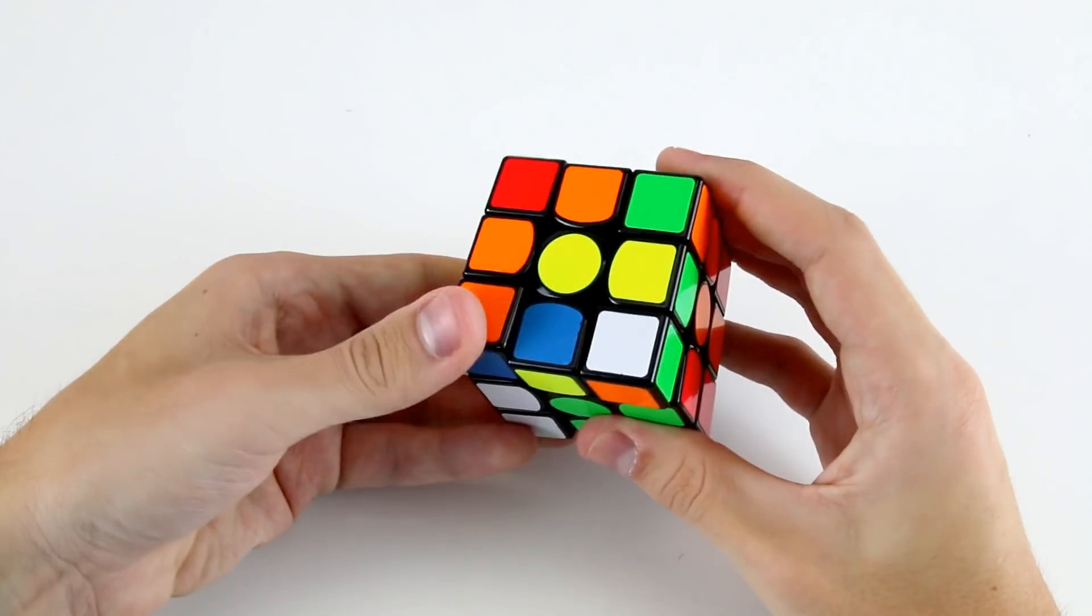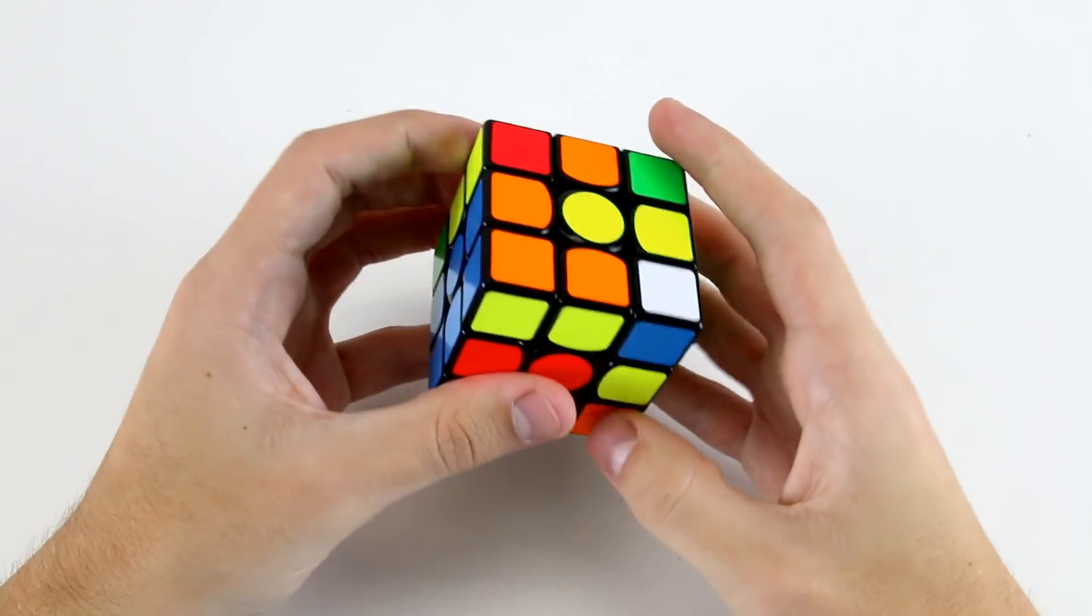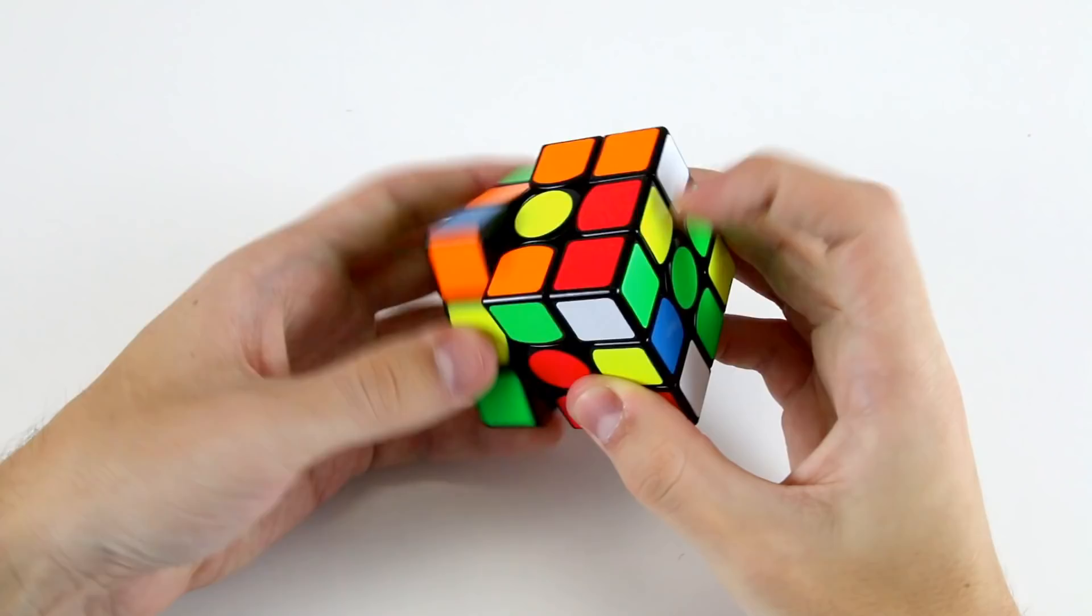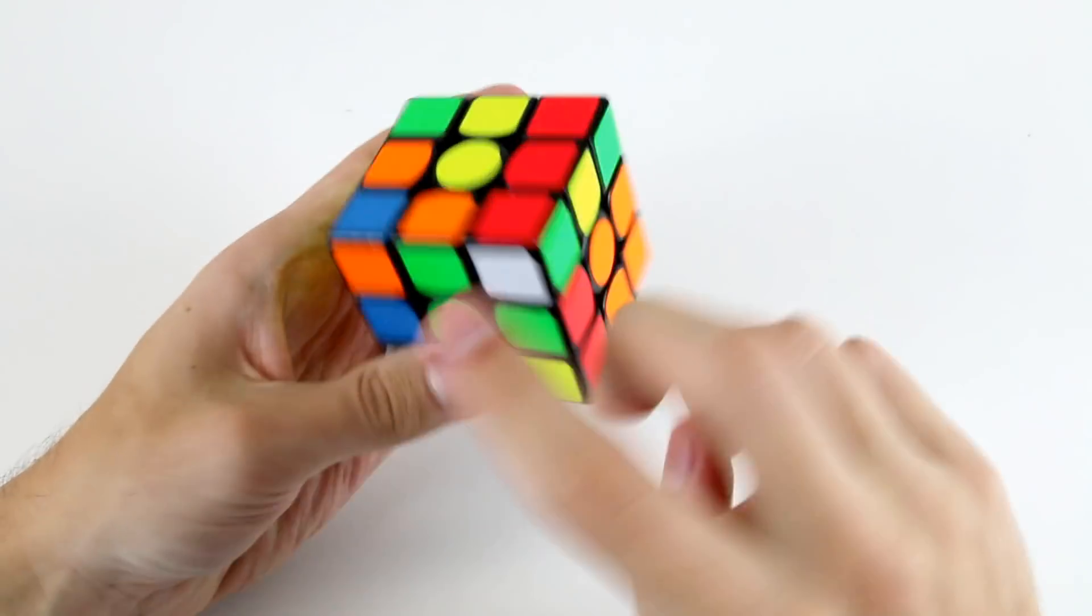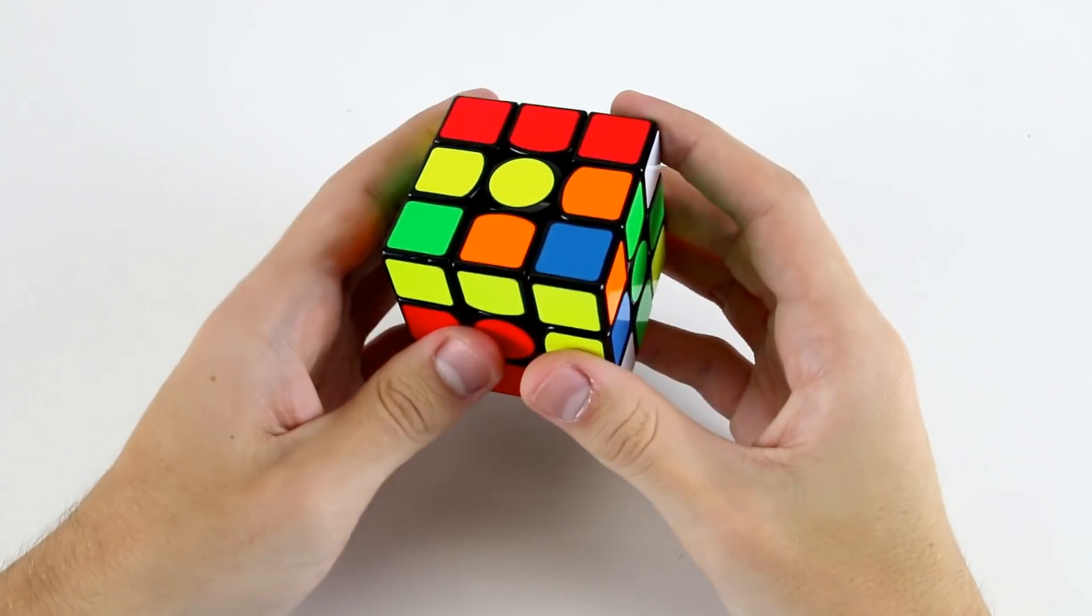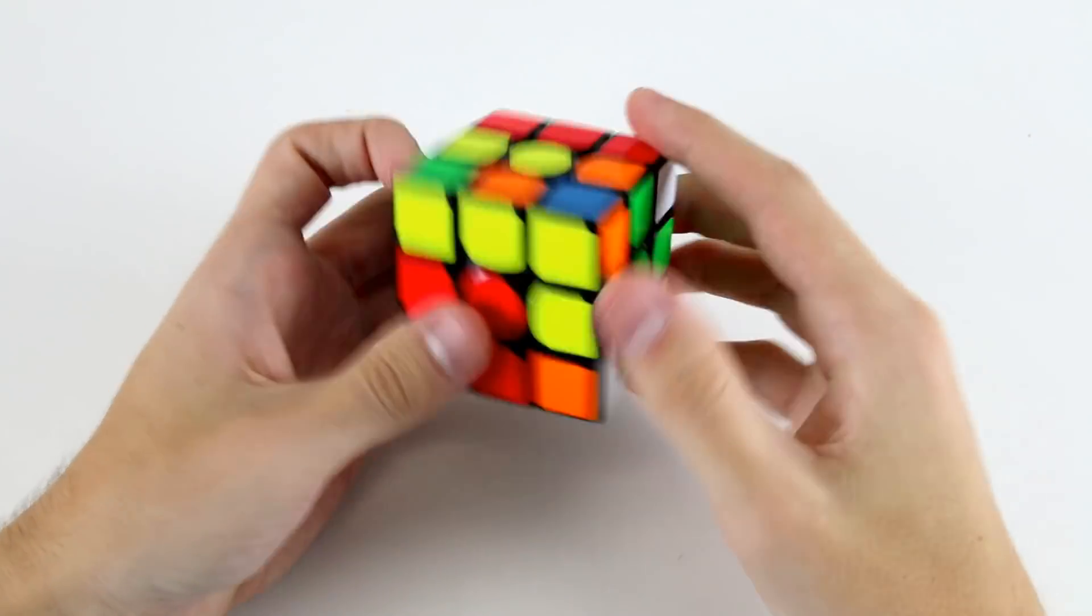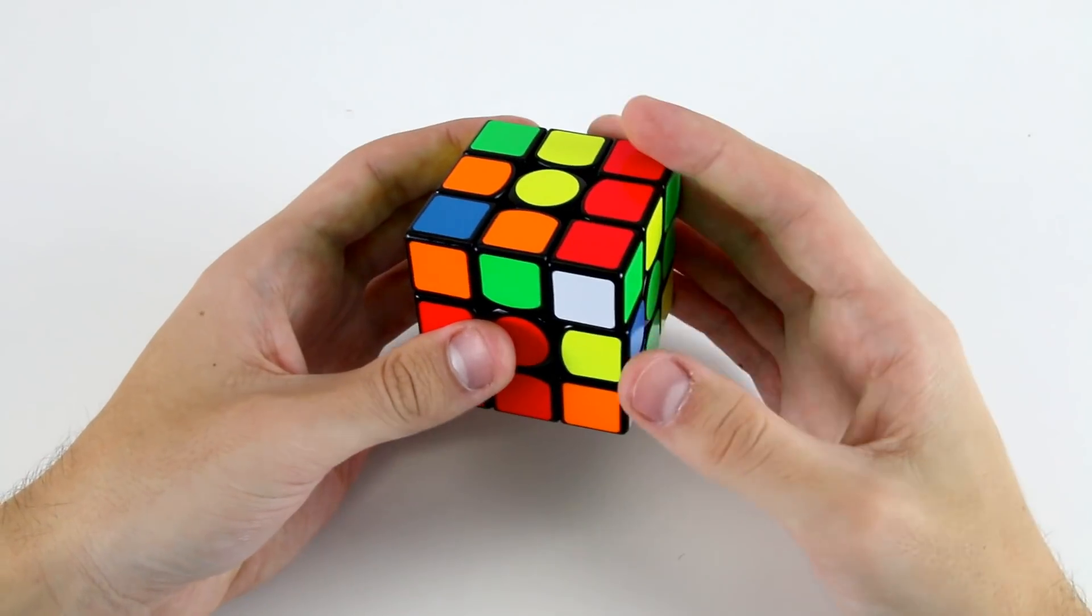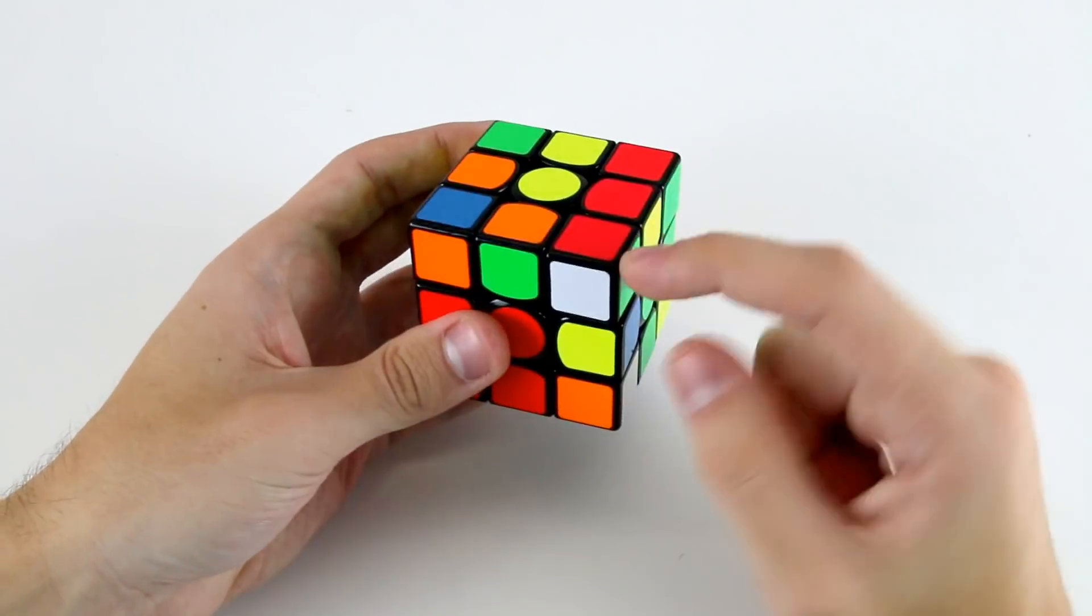If I go like this, l'u l, and then rotate in this direction, solve this f2l pair, now I've got these two f2l edges oriented on my right hand side as well. My left hand side is solved and I've got two oriented edges on my right hand side, so I can easily solve these last two f2l pairs just using r' and u moves.